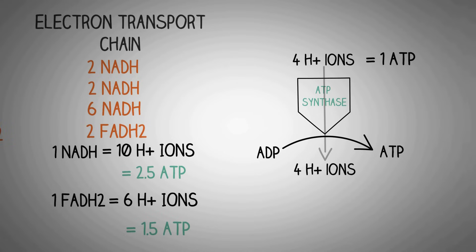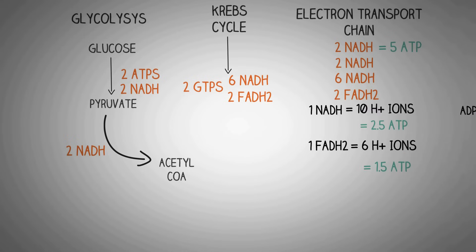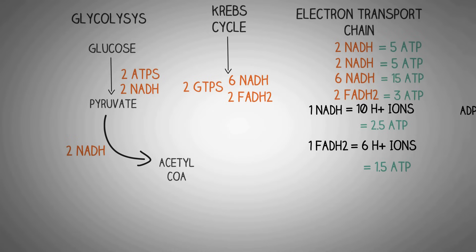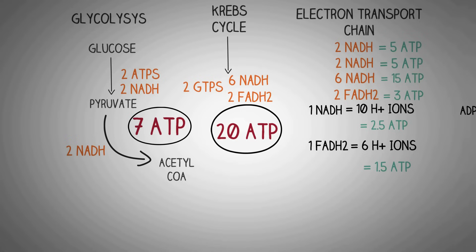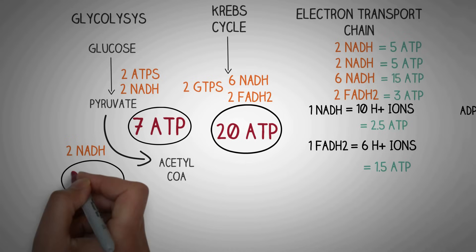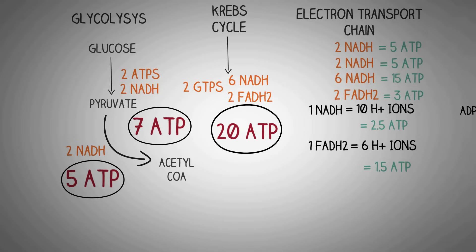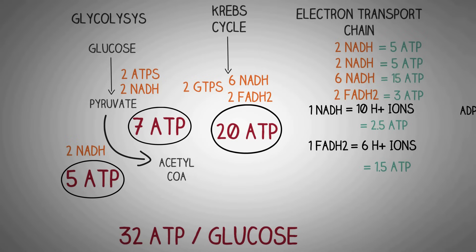Using these values: two NADH from glycolysis give 5 ATPs, two NADH from pyruvate to acetyl-CoA give 5 ATPs, six NADH from the Krebs cycle give 15 ATPs, and two FADH2 from the Krebs cycle give 3 ATPs — totaling 20 ATPs from the electron transport chain alone. Adding 7 ATPs from glycolysis and 5 ATPs from pyruvate conversion, we get a total of 32 ATPs per molecule of glucose passing through all these biochemical cycles.